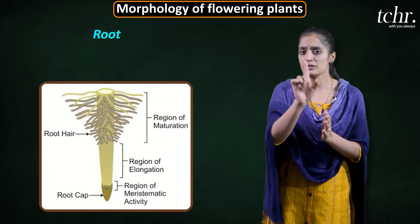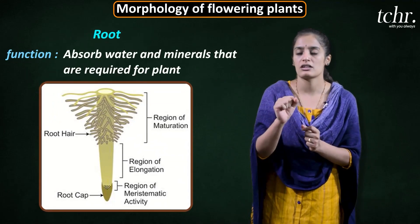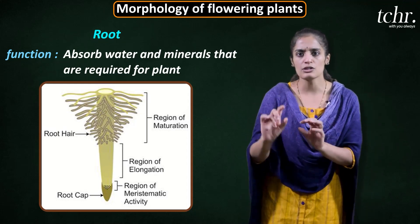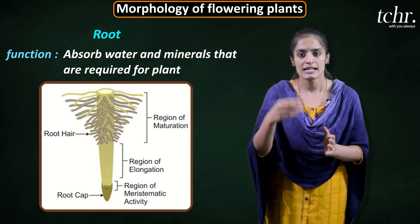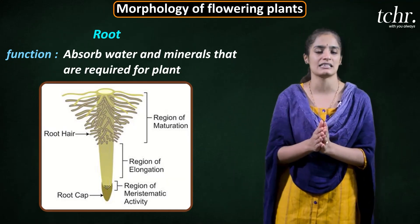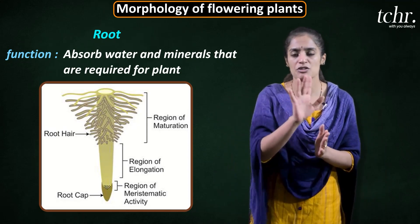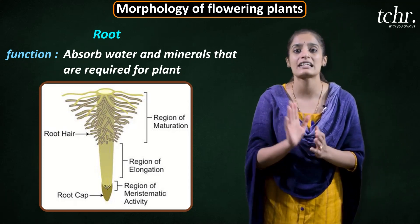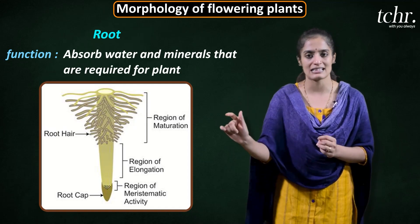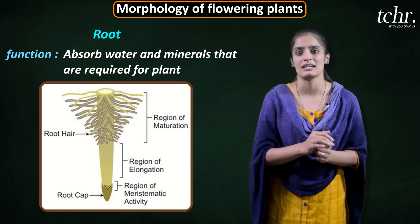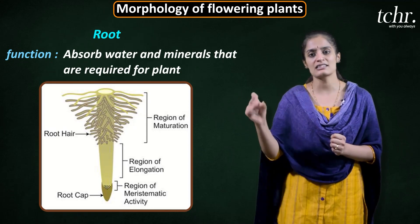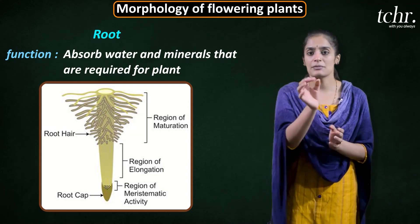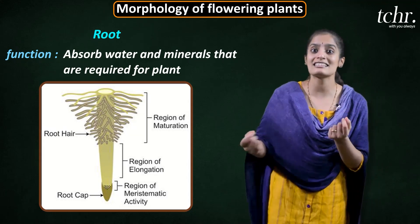First, the root. Root function is to absorb water as well as minerals that are required for the plant. The root has different types of regions. The tip of the root is called the root cap. Just below that, you observe the region called the region of meristematic activity. Meristematic tissues and cells divide and multiply rapidly. The next region is the region of elongation, which is responsible for increasing the length of the root.